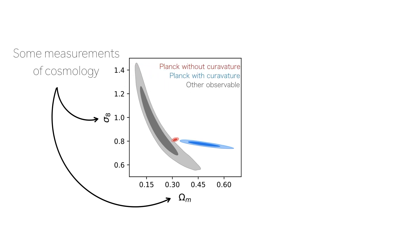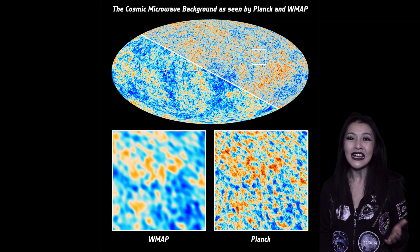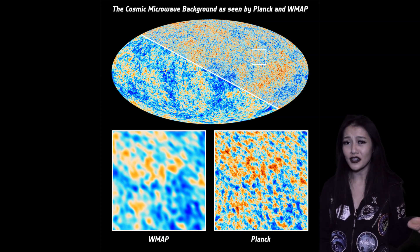You might think that this is due to systematics with the Planck satellite; however, an older CMB satellite, WMAP, similarly found evidence of a closed universe. So unfortunately, the shape of the universe is still an unsolved mystery that has scientists puzzled, and it's an important one if we want to figure out how our universe ends up.